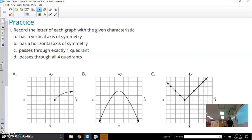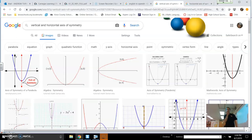It says record the letter of each graph with the given characteristic. The first one has a vertical axis of symmetry versus having a horizontal axis of symmetry. I thought maybe we didn't really cover that very much so why don't I just Google vertical and horizontal axis of symmetry. Let's talk about it for a minute.